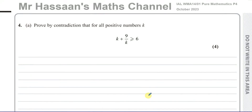Welcome back to Mr. Hassan's Maths channel. I'm now answering question number four from the October 2023 Pure Mathematics P4 International A-level and Edexcel exam. This question is one of the most disliked topics in P4, which is proof by contradiction. It's disliked because it's fairly new to the A-level syllabus and is rather abstract, so students can't always appreciate the topic that well.